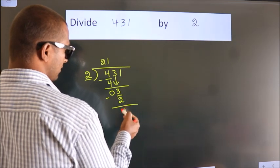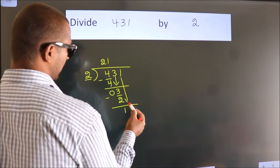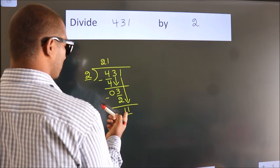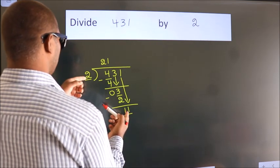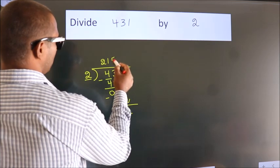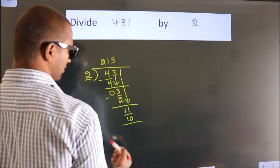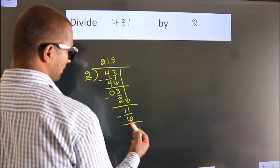After this, bring down the beside number. So, 1 down. So, 11. A number close to 11. In 2 table is 2 5s, 10. Now, we subtract. We get 1.